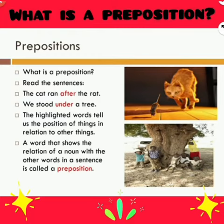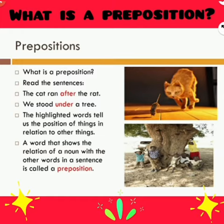The cat ran after the rat. We stood under a tree. The highlighted words tell us the position of things in relation to other things. A word that shows the relation of a noun with the other words in a sentence is called a preposition.